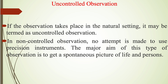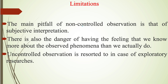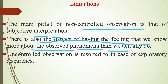In uncontrolled observation, the observation takes place in the natural setting. No attempt is made to use precision instruments, and the major aim is to get a spontaneous picture of life and persons. There is no controlled variable used in the research process. The main limitation of uncontrolled observation is subjective interpretation; there is also a danger of feeling that we know more about the observed phenomena than we actually do. Uncontrolled observation is preferred in exploratory research.